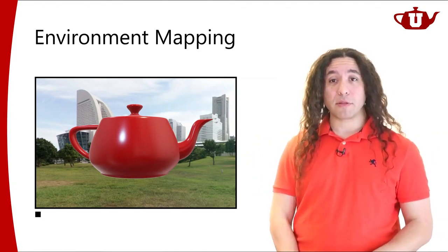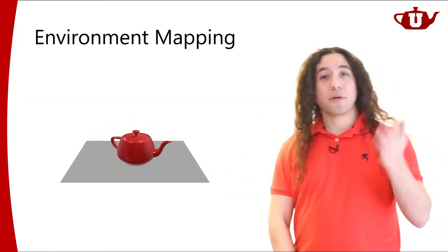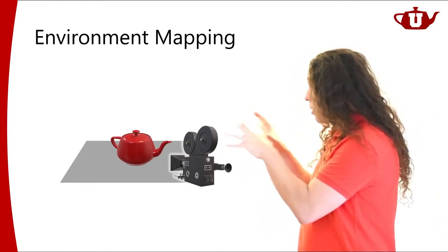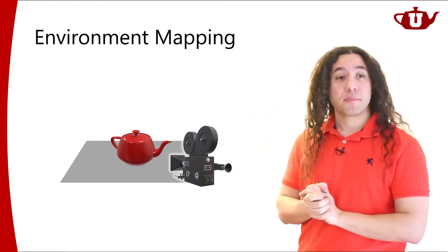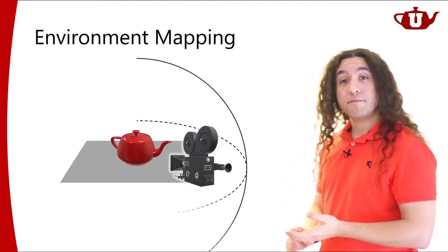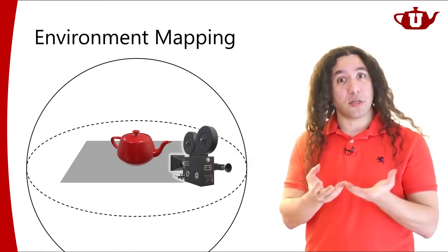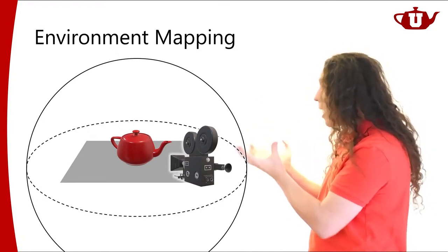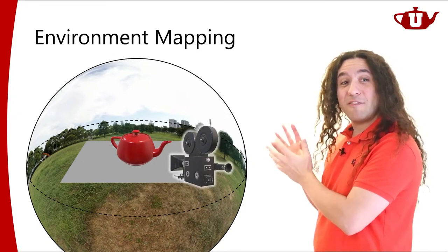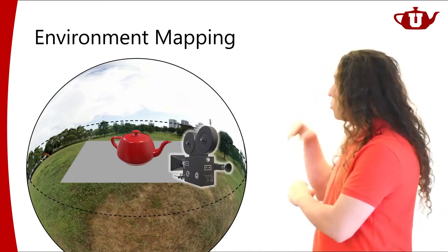Let's think about how to approach this. My scene contains a teapot and a ground plane, with a camera looking at it. One way to provide an environment is to contain the whole scene — including the camera — inside a sphere. If I put a texture on the inside of that sphere, it creates the illusion that the scene is living inside that environment.